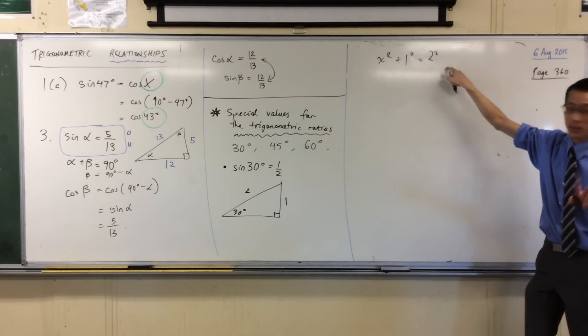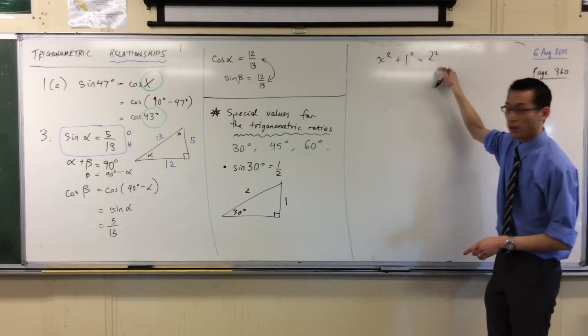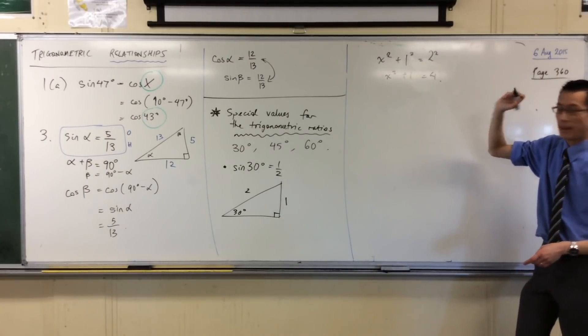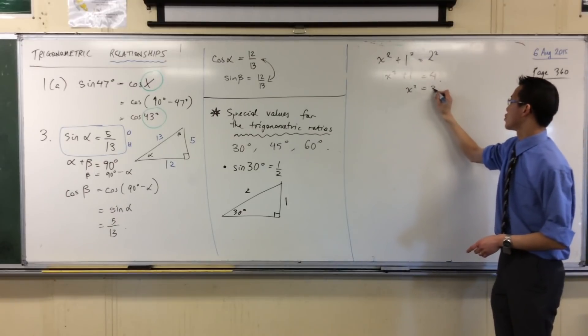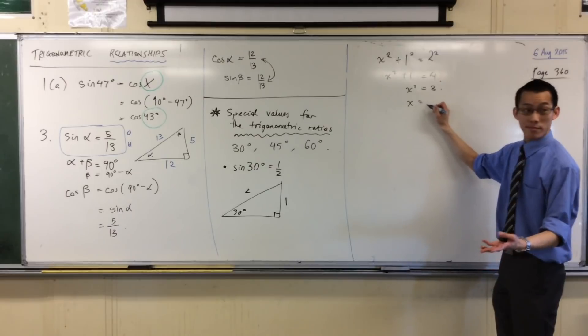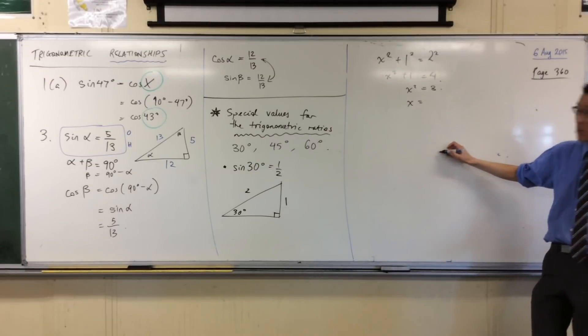That's fine. I know what 1 squared is. I know what 2 squared is. x squared plus 1 equals 4, so x squared should be 3. So what's x? It's just the square root of 3.